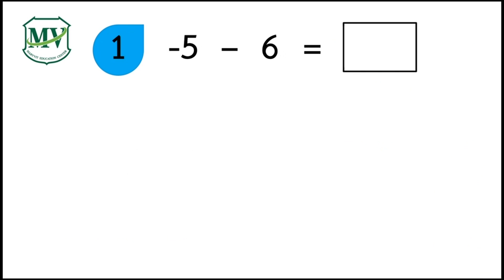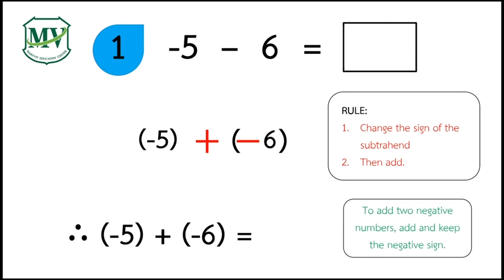Question number 1. Negative 5 minus positive 6 is equal to? Let's solve this problem. Keep negative 5, then change subtraction to addition, and change 6 to negative 6. Negative 5 plus negative 6, the answer is negative 11.